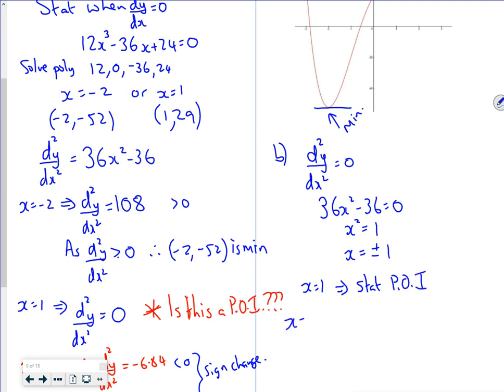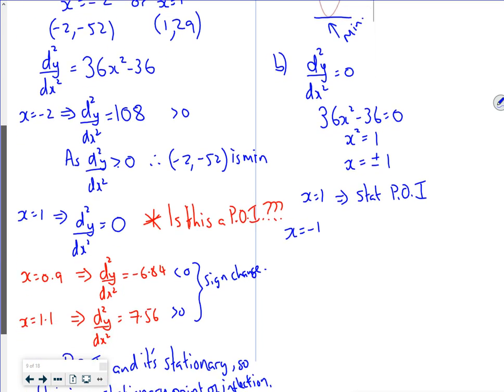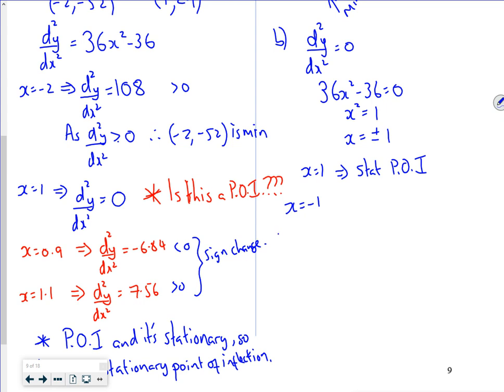Now let's check x = -1. I need values around x = -1. At x = -1.1, d²y/dx² = 7.56. At x = -0.9, d²y/dx² = -6.84. That one's greater than 0, that one's less than 0. I've got a sign change, so that must be a point of inflection.